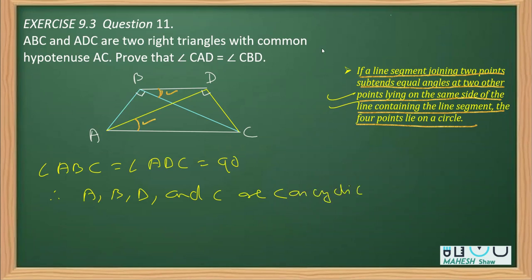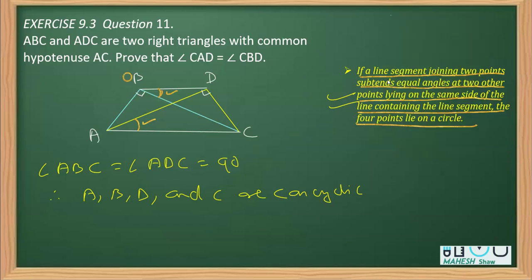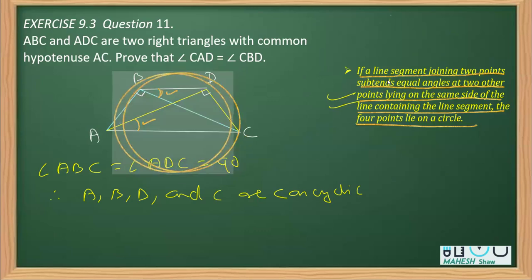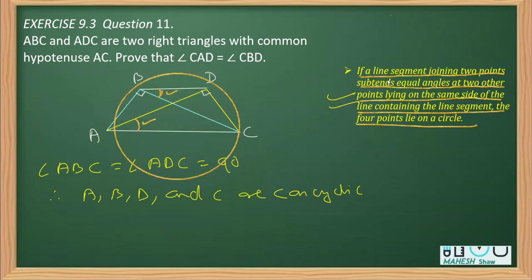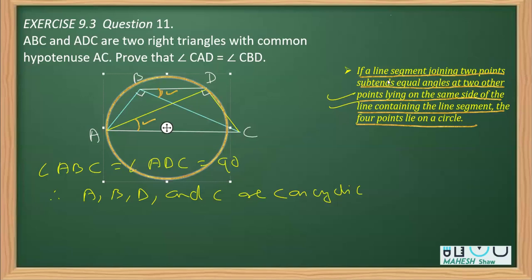Concyclic means all four points lie on a single circle — that is, a circle can pass through all four points A, B, D, and C. So if you draw a circle, all four points will lie on it.